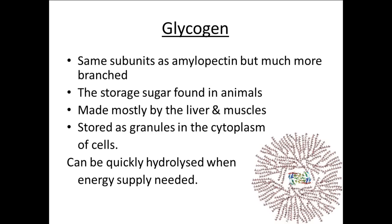Glycogen is a storage molecule found within humans. Whereas plants have starch, humans have glycogen, and it has the same subunit — glucose. It is stored within the muscles and also within the liver. It can be very quickly broken down because of its hugely branched structure, with a lot more 1-6 glycosidic bonds, allowing very rapid energy release.